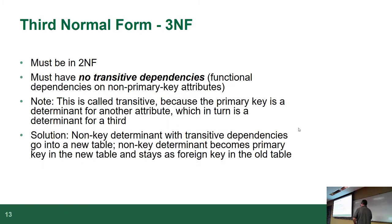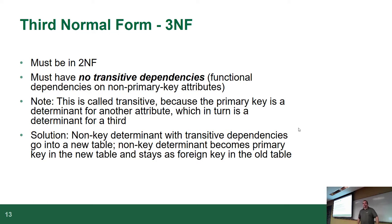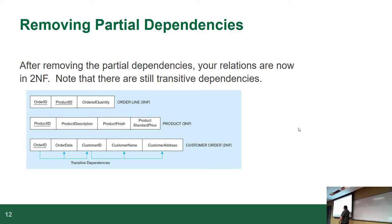Which brings us to the third normal form. Rule number one: you can't be in third normal form unless you're in second normal form — you're starting to see a pattern. It's just like Dragon Ball — you can't be one color unless you're the previous color before. The next rule is there must be no transitive dependencies. Even though customer ID is not part of the primary key, there are parts of the data that still depend on it — that's known as a transitive. To be in third normal form you've got to get rid of that.